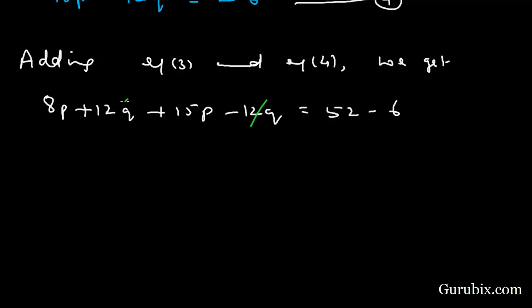12q and minus 12q cancel out. We have 23p equals 46, which means p equals 2. Now we shall substitute this value of p in equation 3